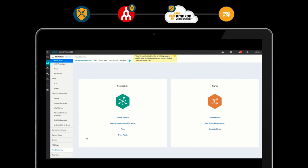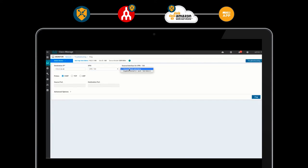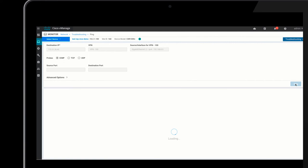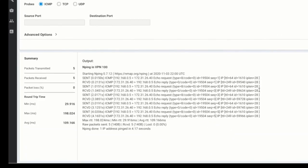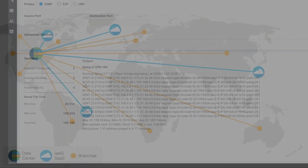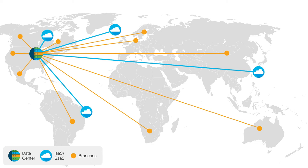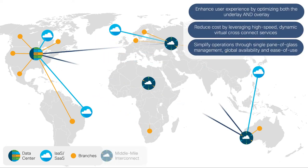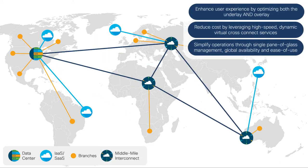With Cisco SD-WAN underlay automation through Megaport, you can create fully reliable and redundant worldwide connections between your sites and cloud applications within minutes, all through the vManage dashboard. You can expect to save costs compared to MPLS and cloud egress charges, reduce the time to provision circuits from months to minutes with no hardware required, and add reliability back to the middle mile — ensuring end-to-end consistent security, policy segmentation, and performance across the entire network.